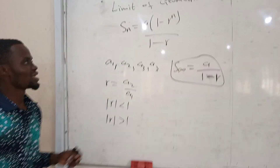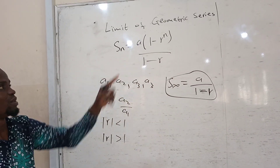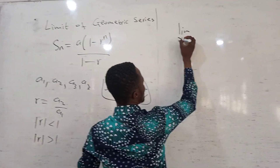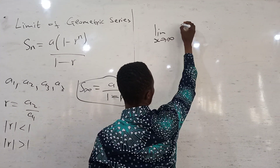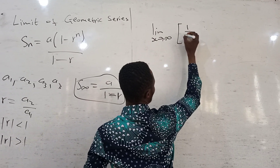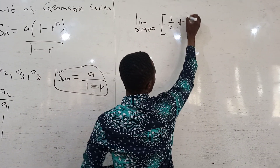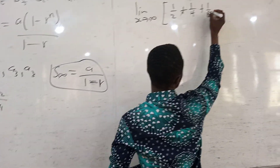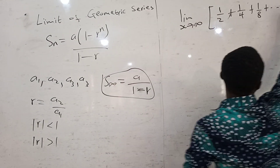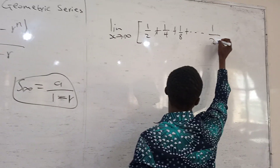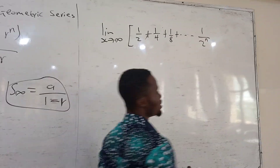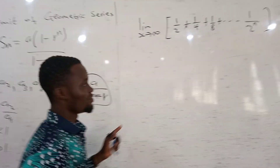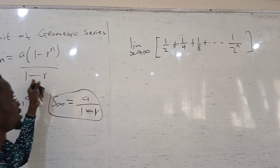So depending on this, when I give you the limit of a geometric series — the limit as n goes to infinity — I have something like 1/2 plus 1/4 plus 1/8, and so on up to 1 over 2 raised to the power n.